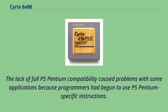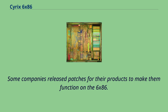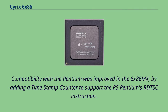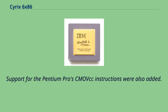The lack of full P5 Pentium compatibility caused problems with some applications, because programmers had begun to use P5 Pentium-specific instructions. Some companies released patches for their products to make them function on the 6x86. Compatibility with the Pentium was improved in the 6x86 MX by adding a timestamp counter to support the P5 Pentium's RDTSC instruction, and support for the Pentium Pro's CMOV instructions was also added.